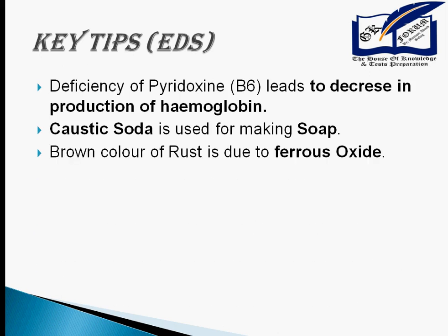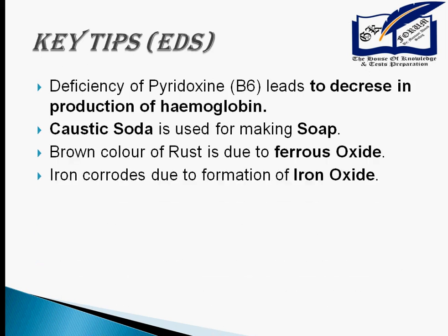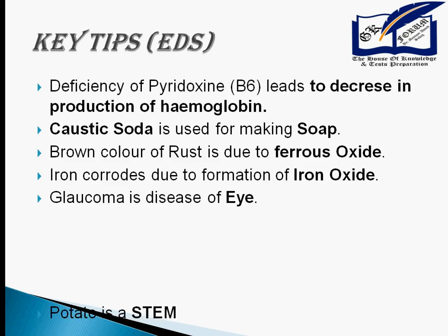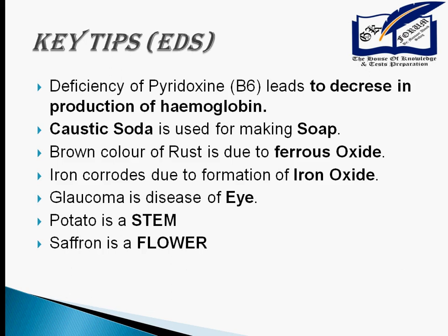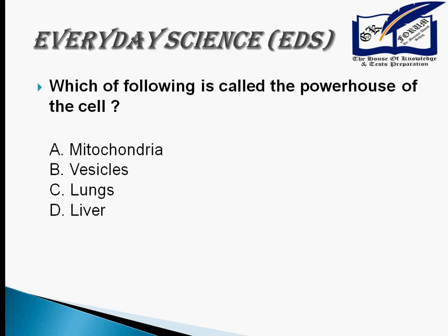Brown color of rust is due to ferrous oxide. Iron rusts due to the formation of iron oxide. Glaucoma is a disease of the eyes. Potato is basically a stem. Saffron is a flower. The powerhouse of the cell is mitochondria.